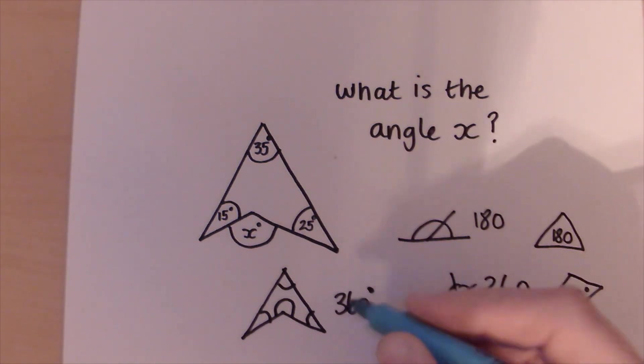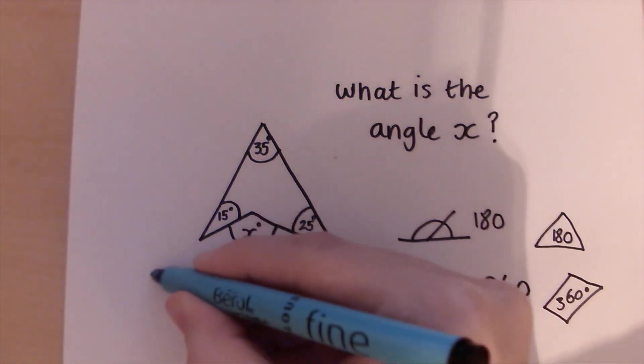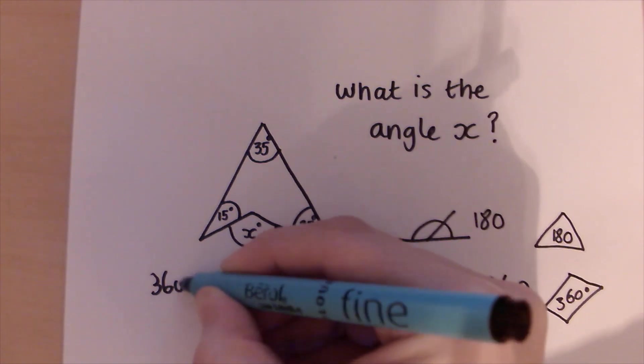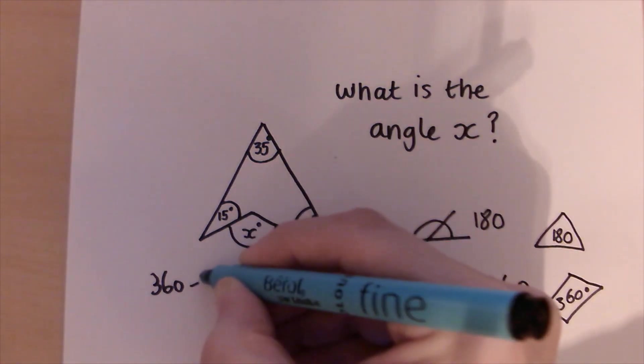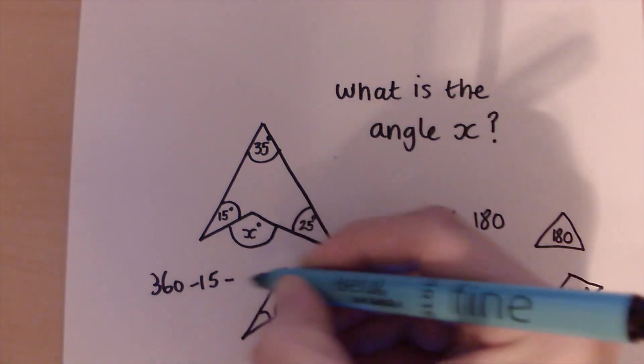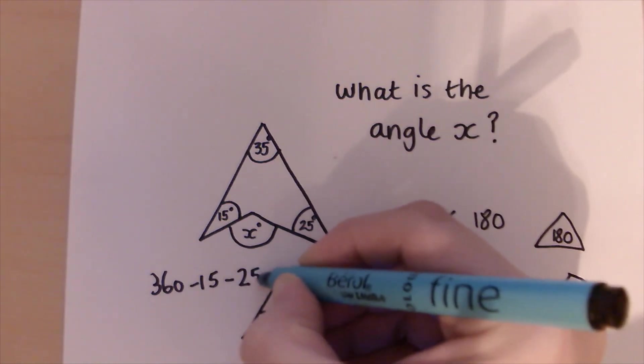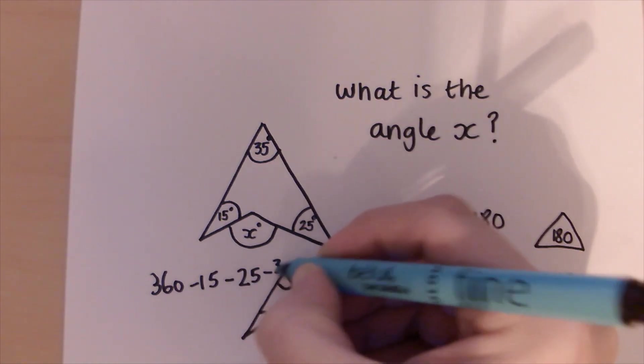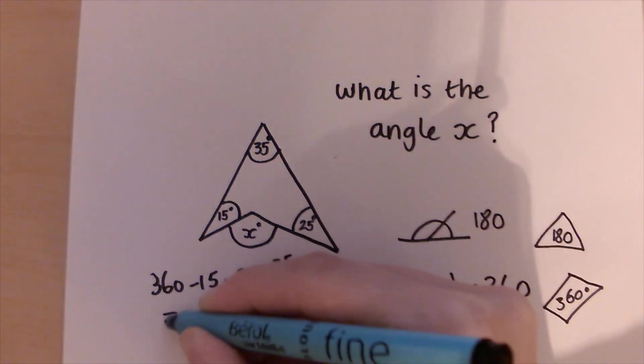So if I've got 360 and I'm going to take away 15, take away 25 and take away 35, I'm going to get my answer.